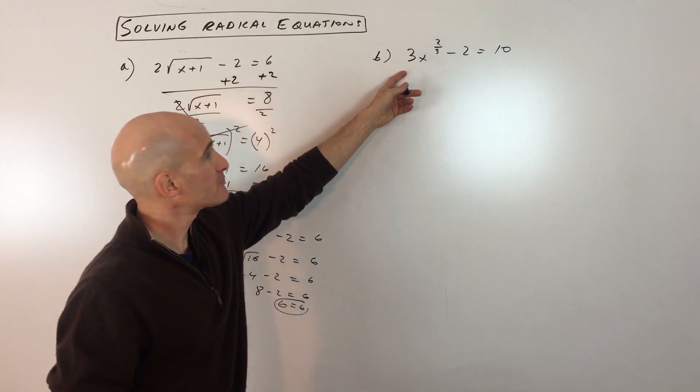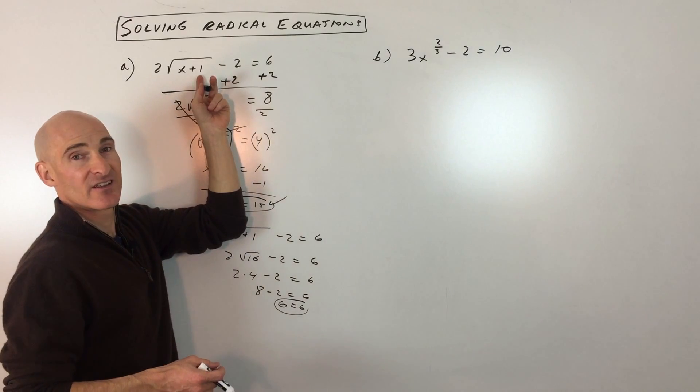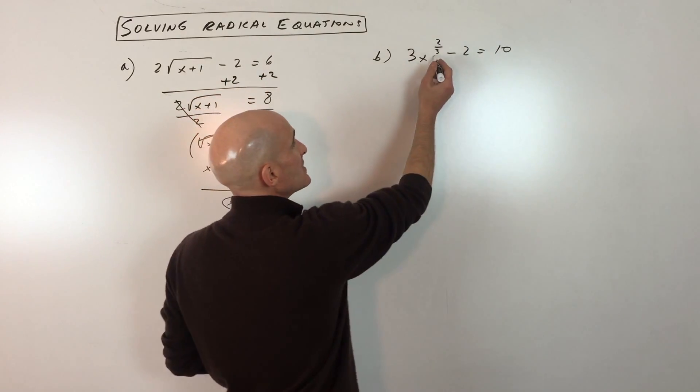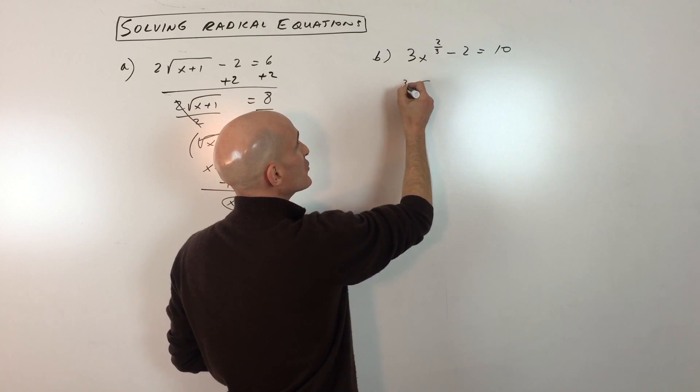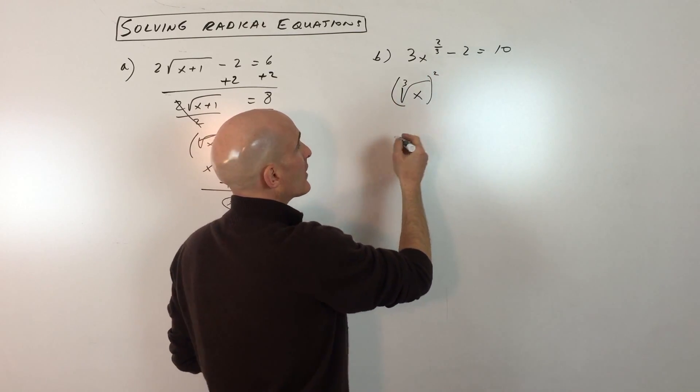Let's look at example B here. Here you can see this doesn't look like a radical equation like the original one that we did. But it is, in fact, a radical, because if you see this denominator, that's really representing the cube root of x, the quantity squared.